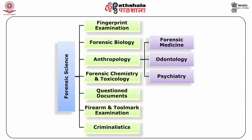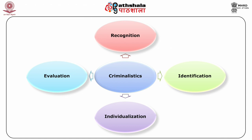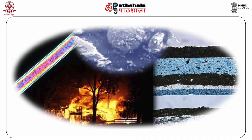The term forensic science is sometimes used as a synonym for criminalistics. Both these terms encompass a diverse range of activities. Forensic science can also be defined in a wider perspective to include fingerprint examinations, forensic biology, anthropology including forensic medicine, odontology, psychiatry, forensic chemistry and toxicology, questioned document examination, and also firearm and toolmark examination, and criminalistics as well. Criminalistics is a discipline of forensic science which is concerned with the recognition, identification, individualization, and evaluation of physical evidence by using the methods and techniques of natural sciences in matters of legal significance. It includes all the areas of trace evidence examination and forensic chemistry.